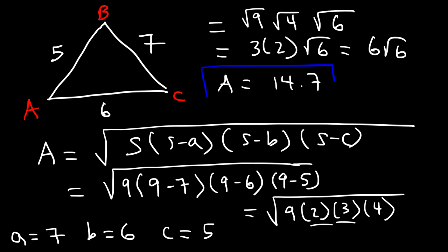So now you know how to use Heron's formula to find the area of an SSS triangle, if you have all three sides. So if you have two sides and the included angle, you can use the other formula, A equals 1 half AB sine of angle C. But if you have all three sides, you want to use Heron's formula.